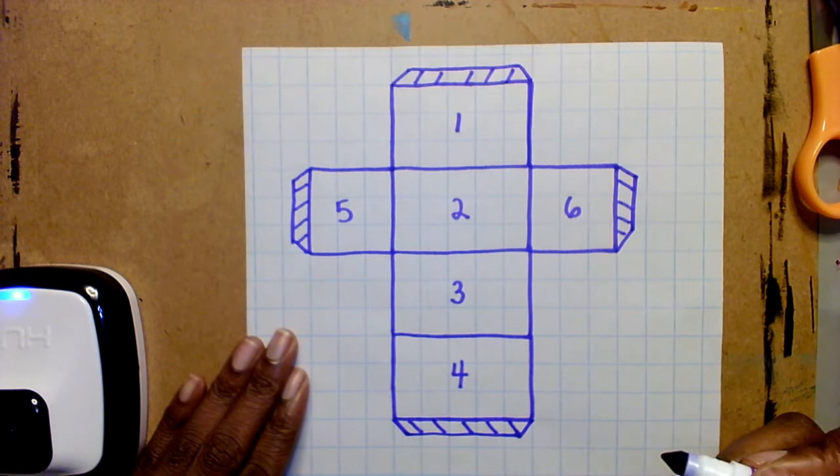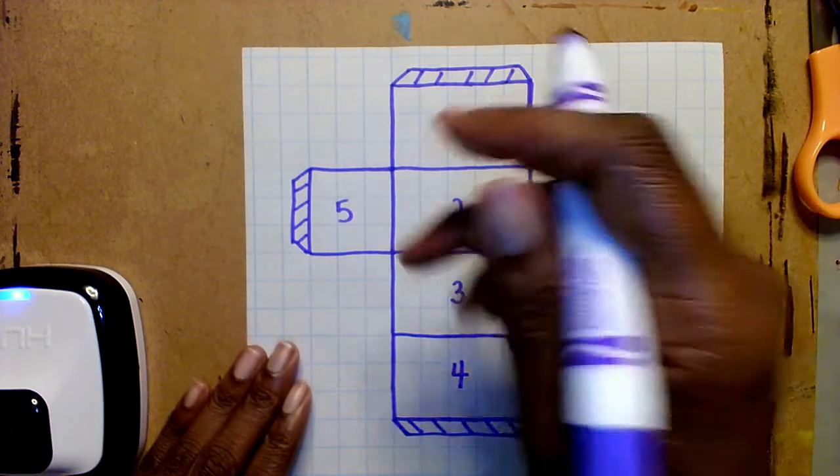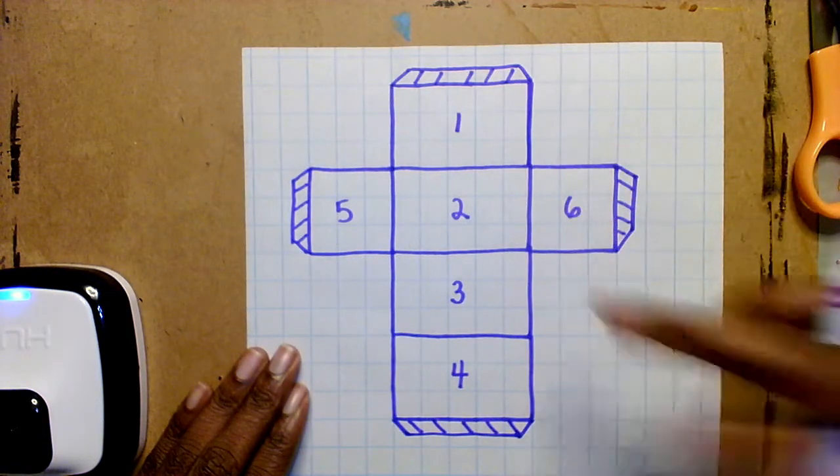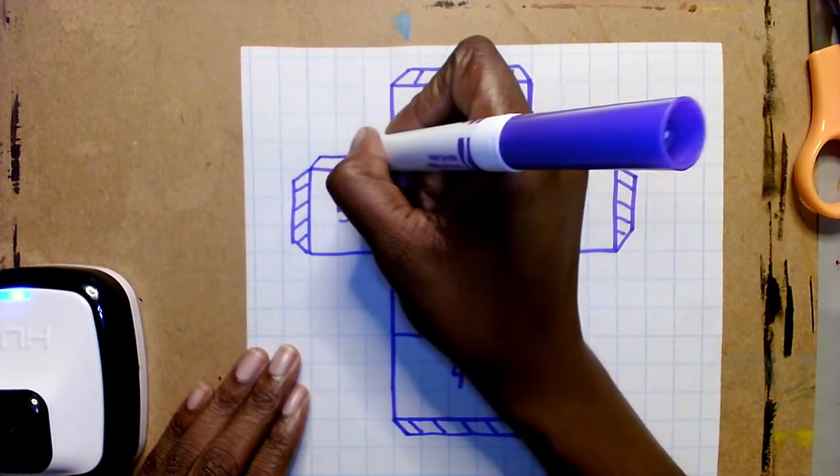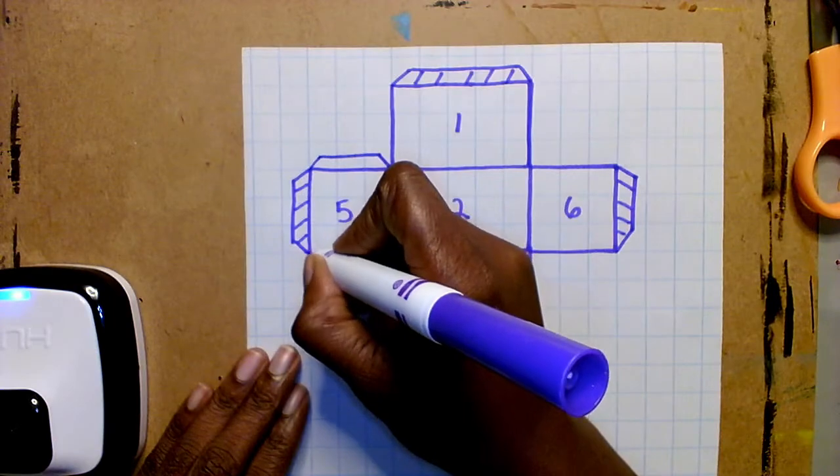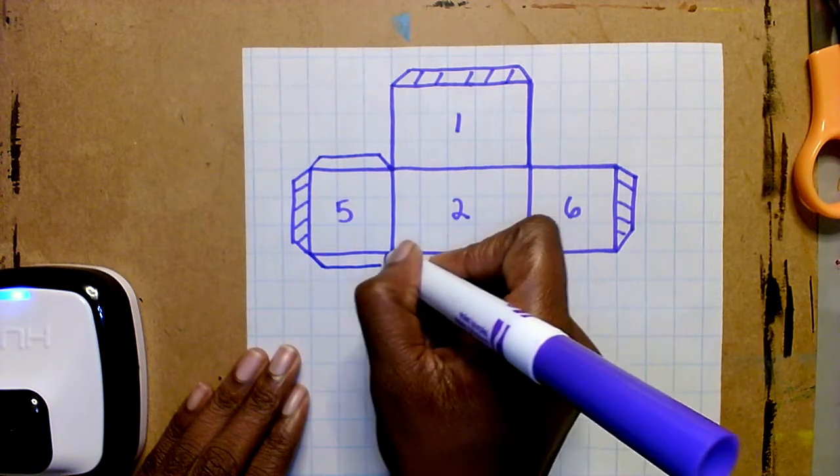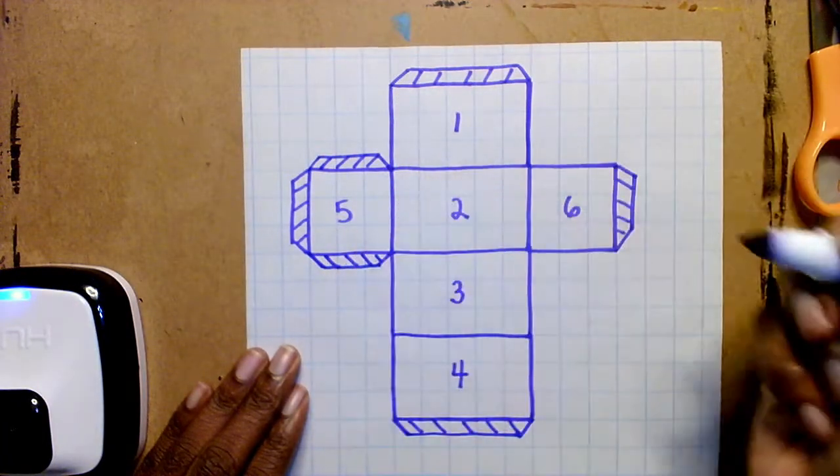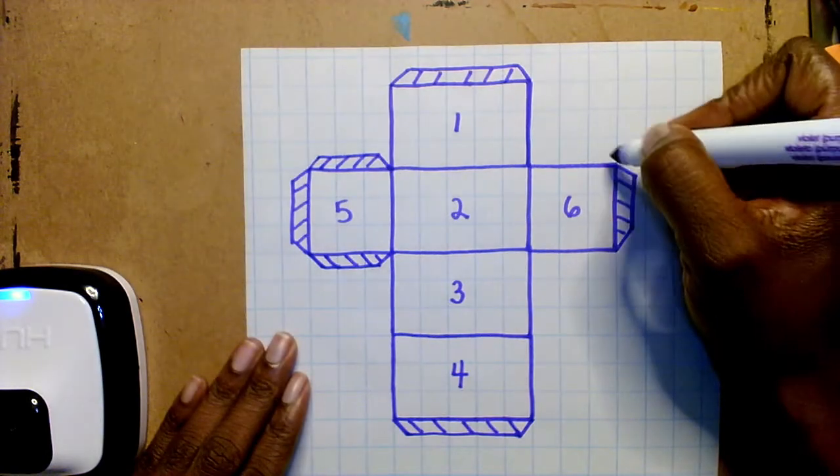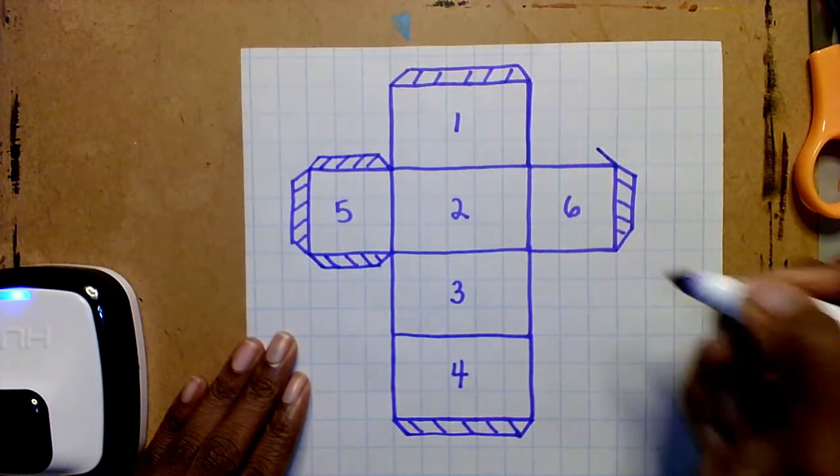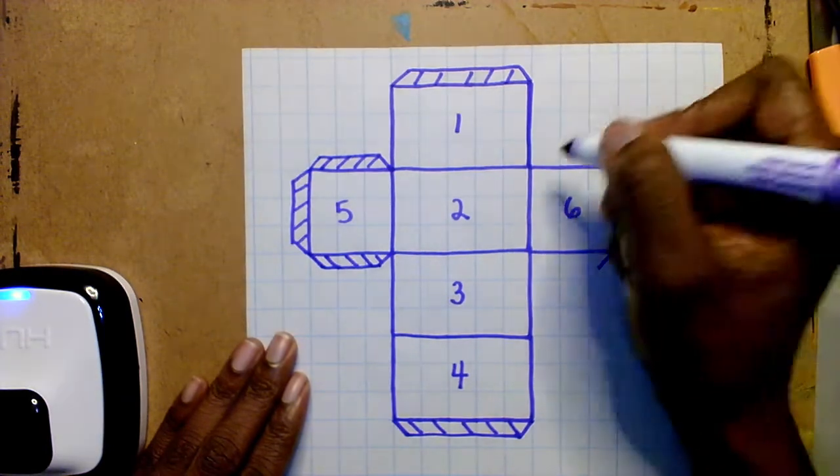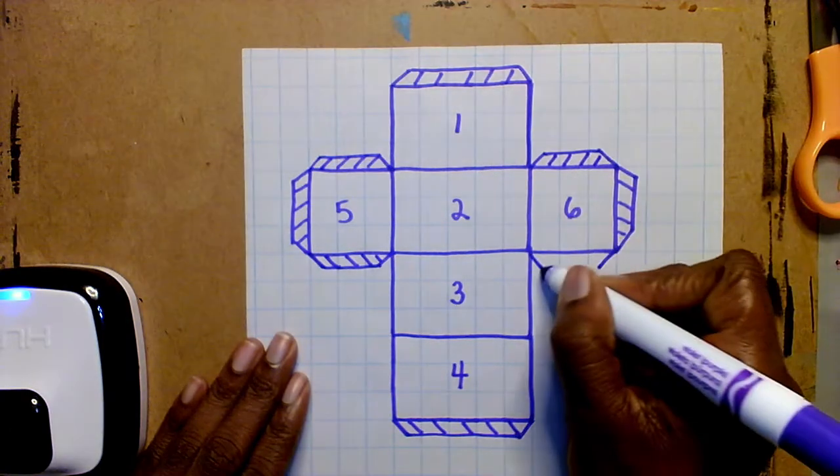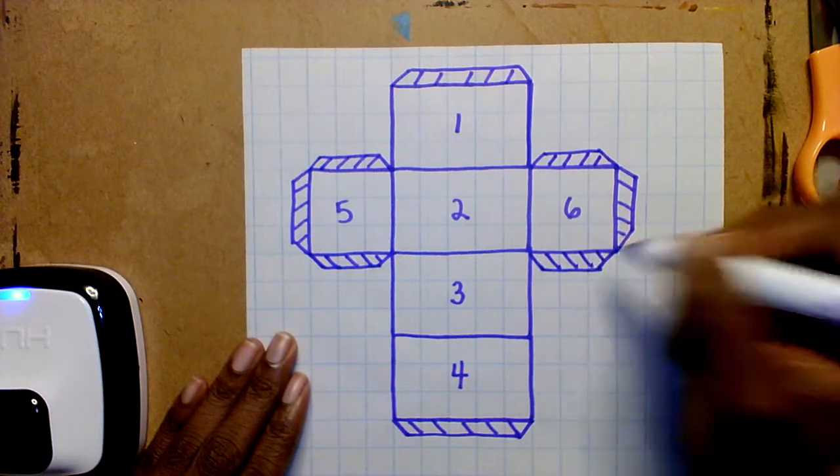But in order to close off my sides and make sure I don't have many gaps, I'm going to add extra tabs here on the top of five and the bottom of five and the top of six and the bottom of six. So yes, I will have to do a bit more cutting, but it's worth it in the end. As you're drawing your tabs, you can even think of extending this angled line. Okay, now I'm ready to cut.